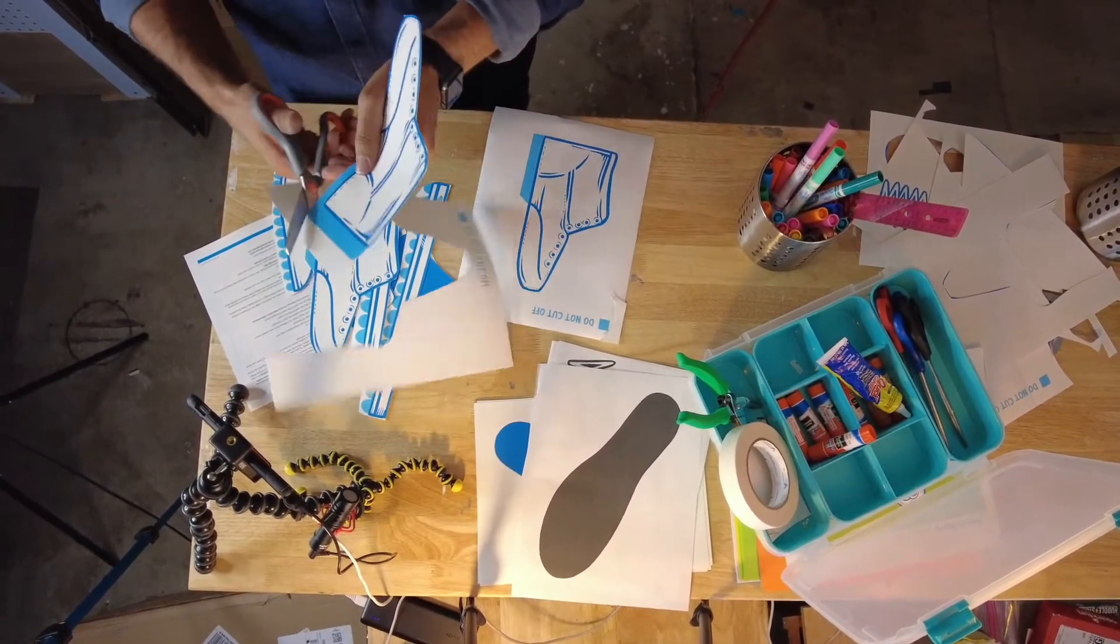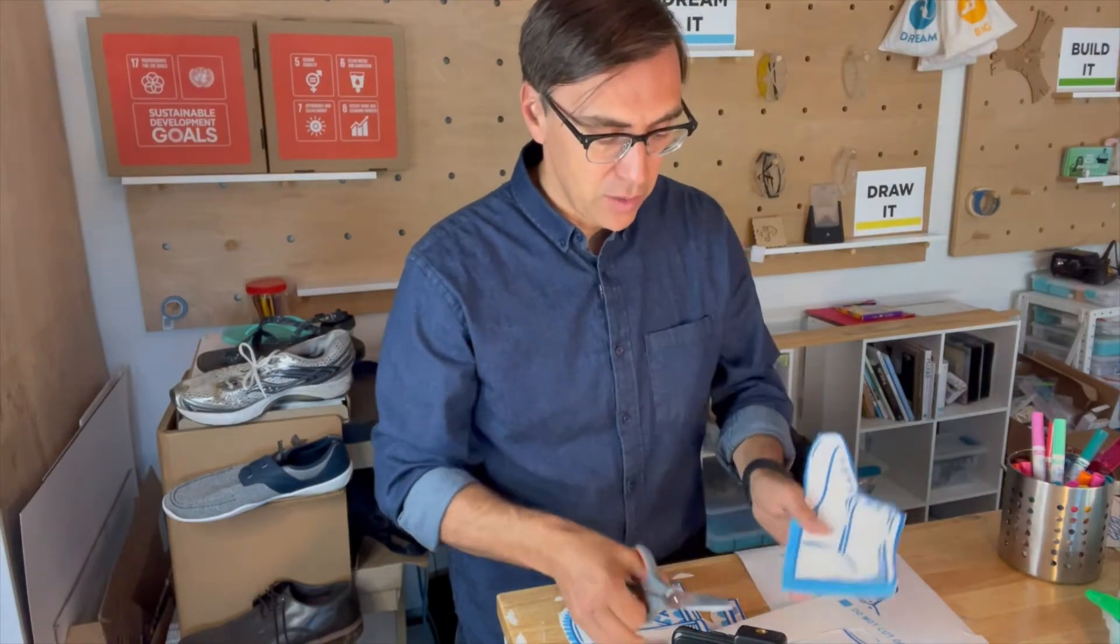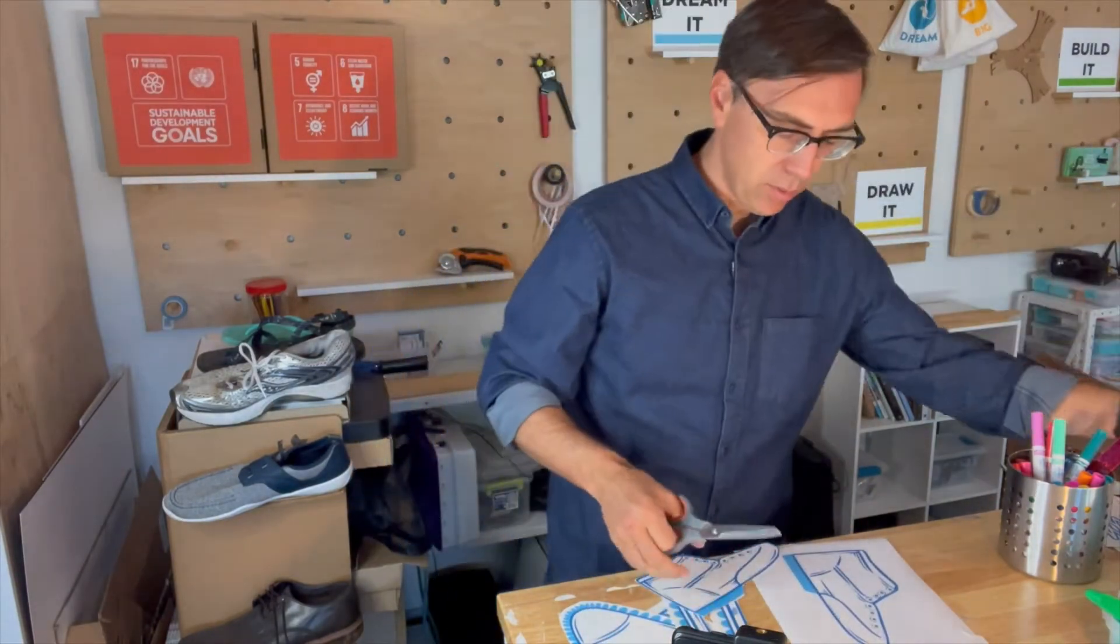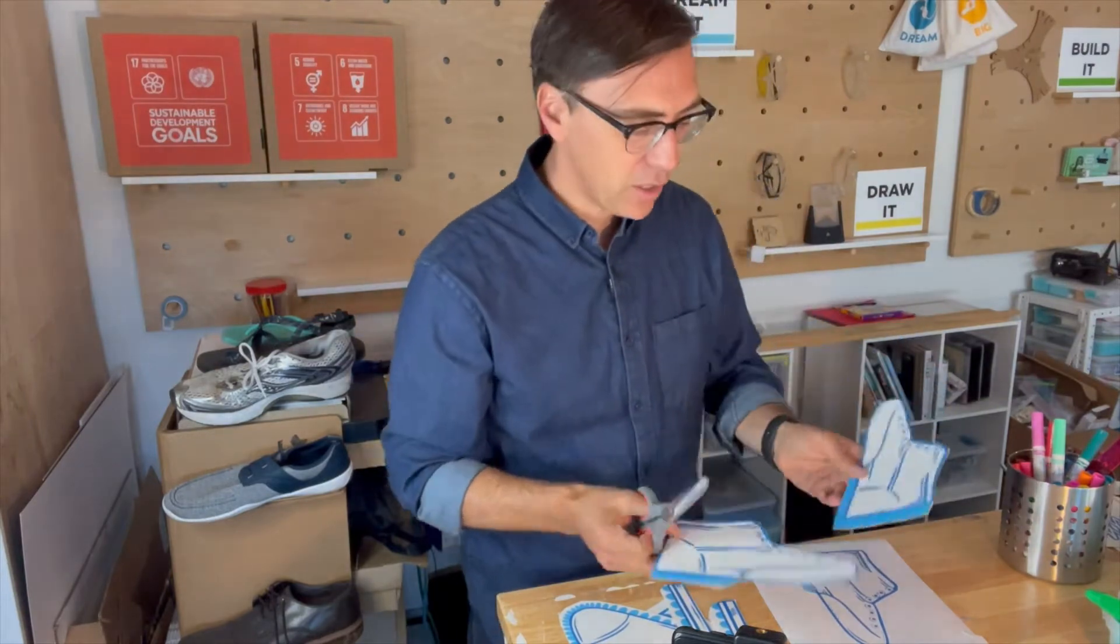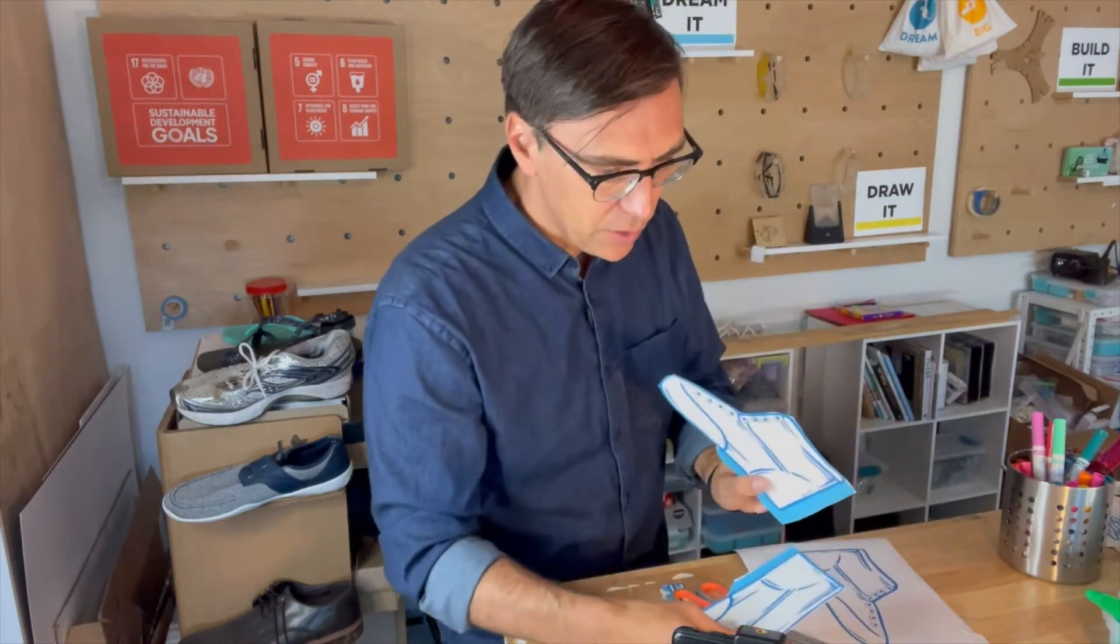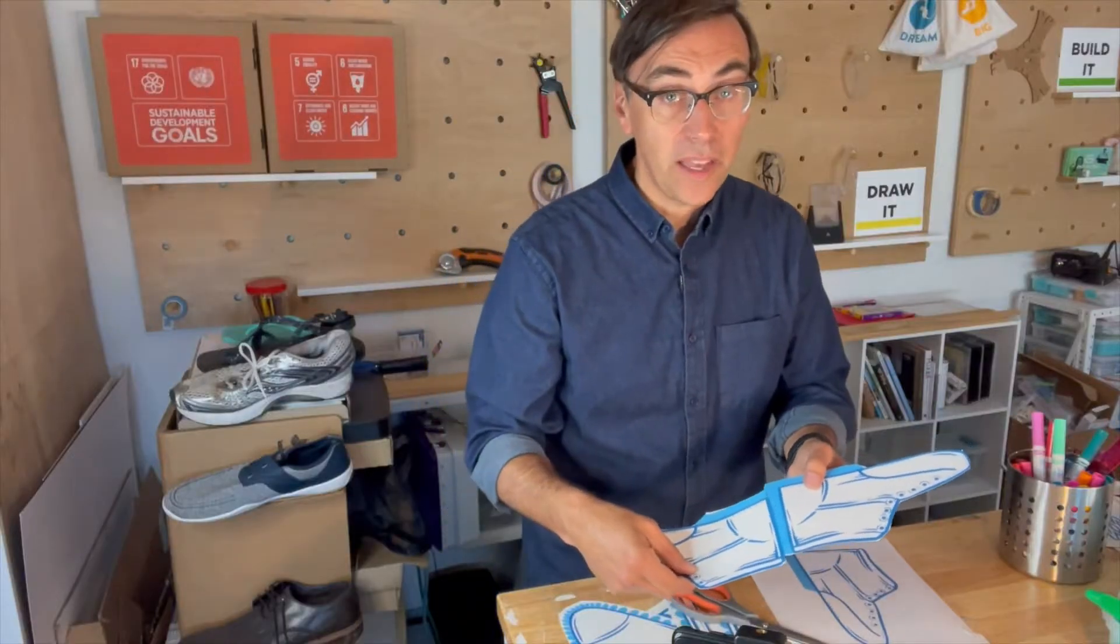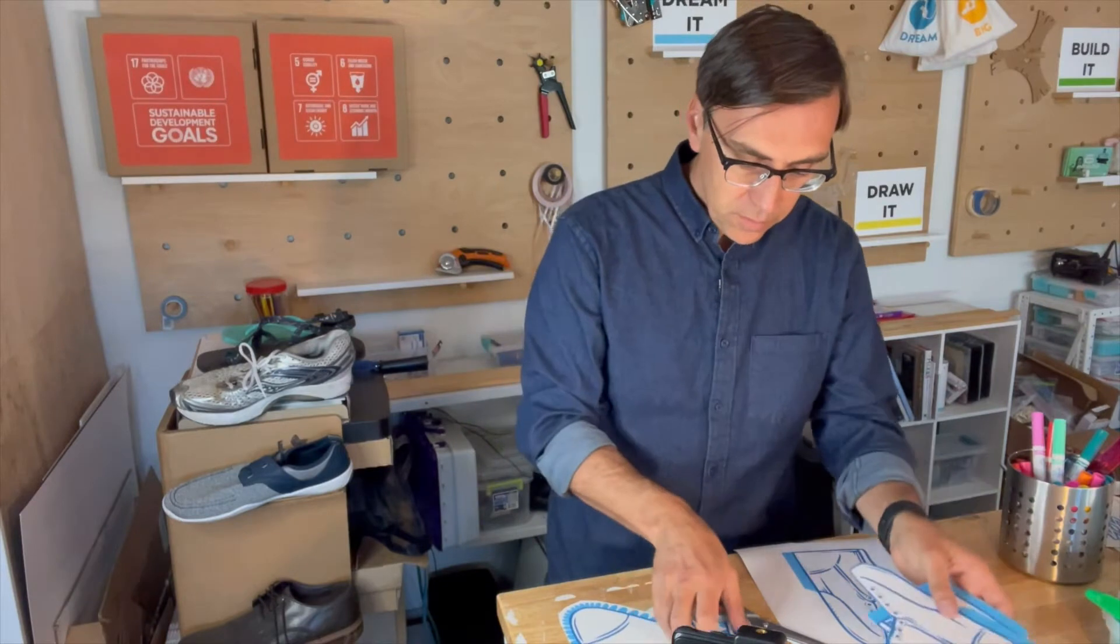Remember, don't cut the blue part or the light shaded part—just along the dark lines. You'll see that these two are tabs that are gonna glue together on the back, so that's what you're gonna want to do.